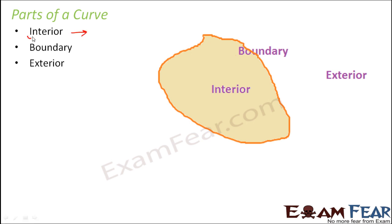Interior means inside. So anything that is present inside the curve will be termed as interior. Anything that is present on the curve, on the boundary of the curve, that would be boundary. And anything that is present exterior means outside. So anything that is present outside would be called exterior of the curve.